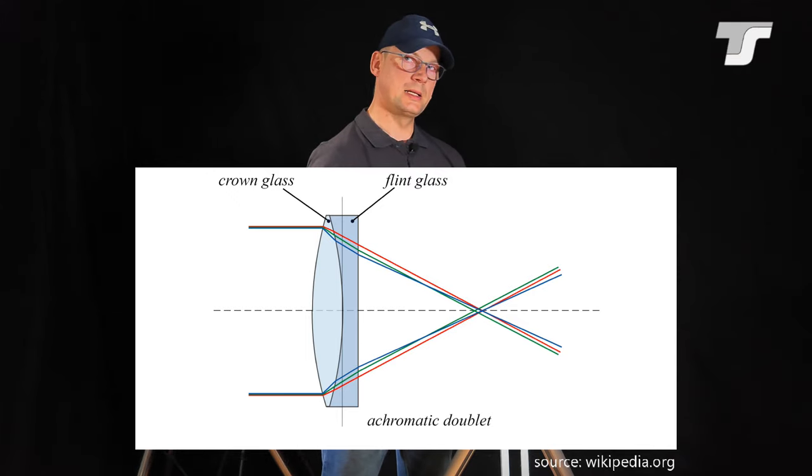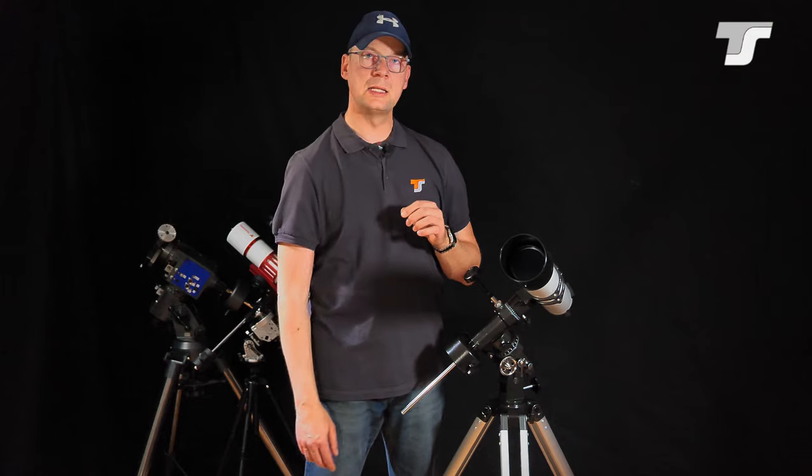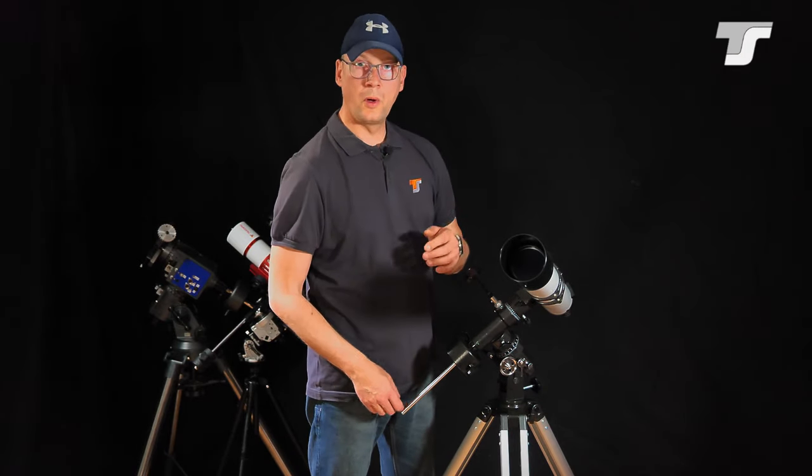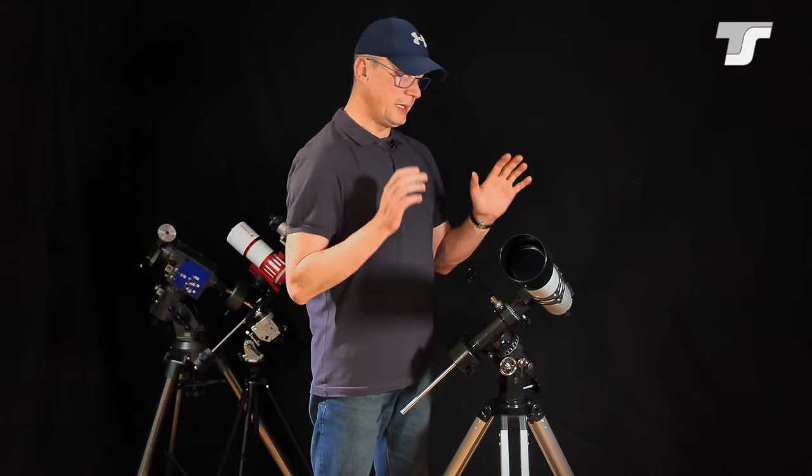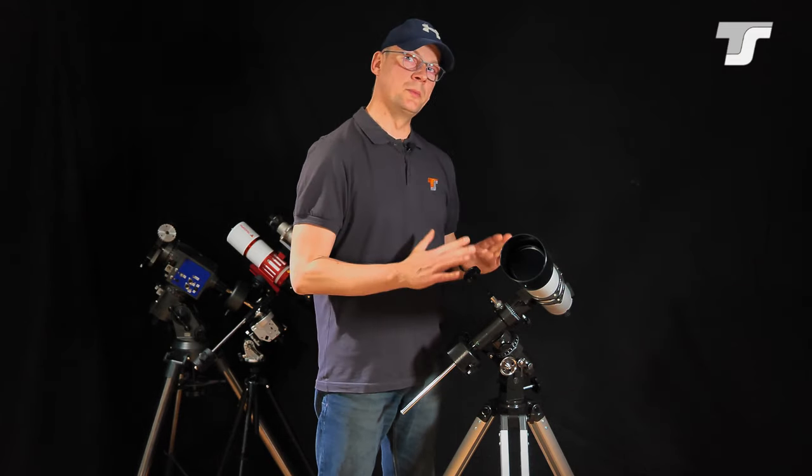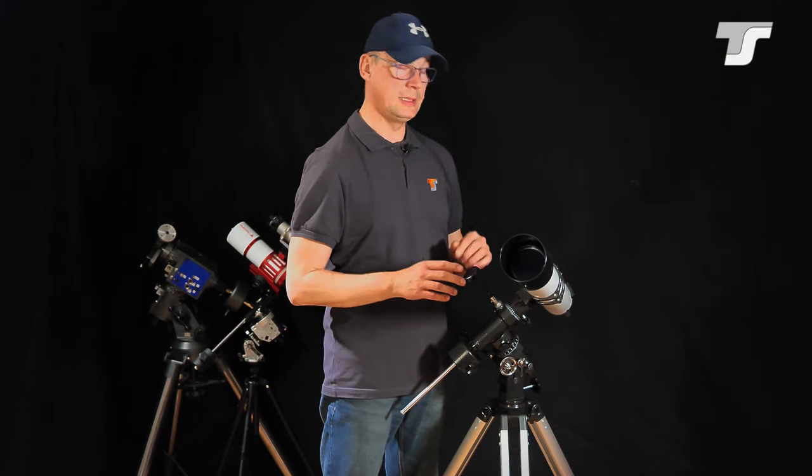So we will still have little artifacts. So this is where three or even four-element lenses come into play. Here, with the beginner telescope, we are talking about two lenses, a two-element optic. That's a good starting point.